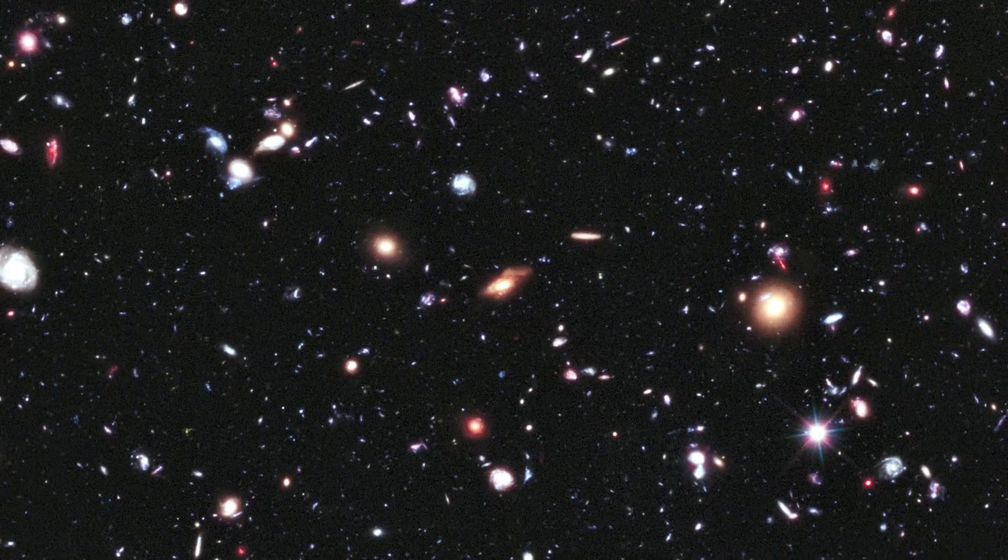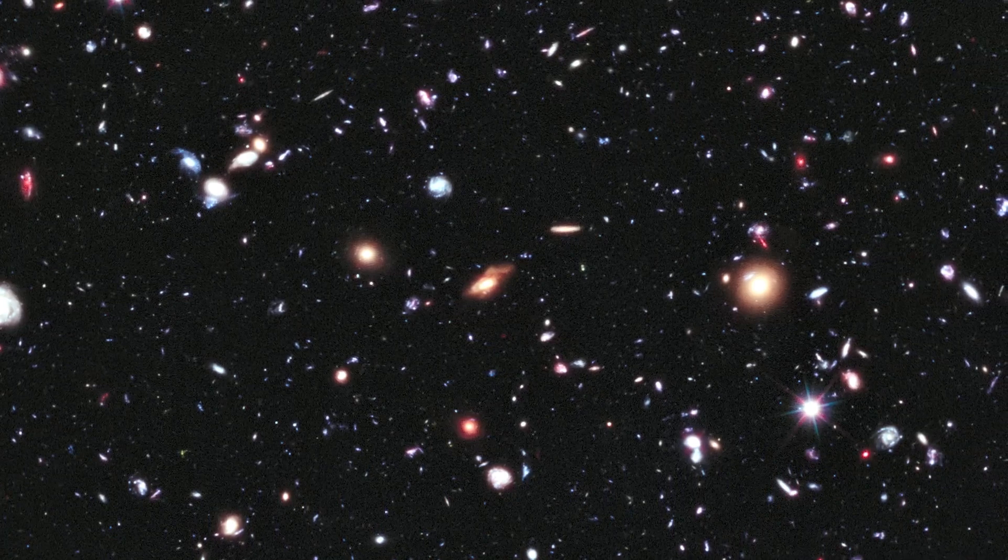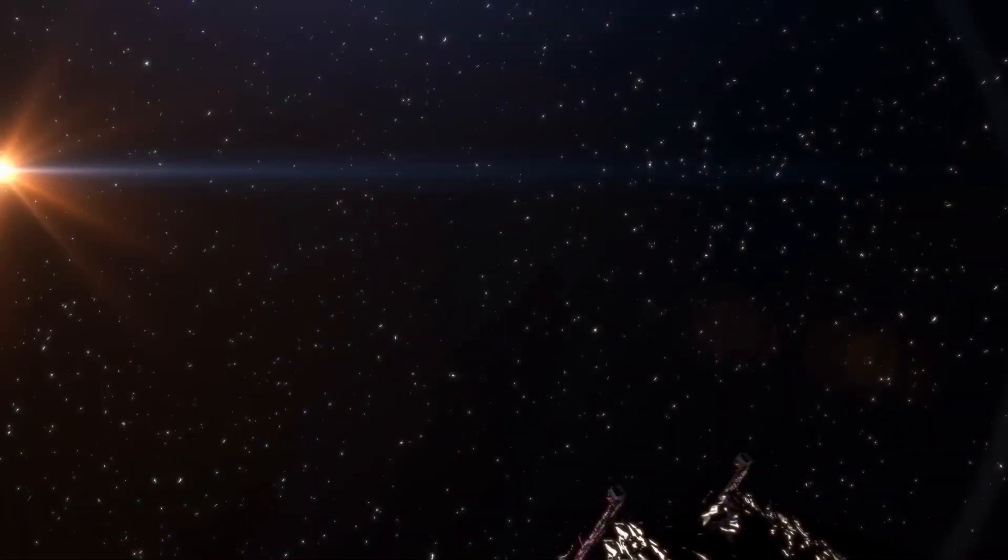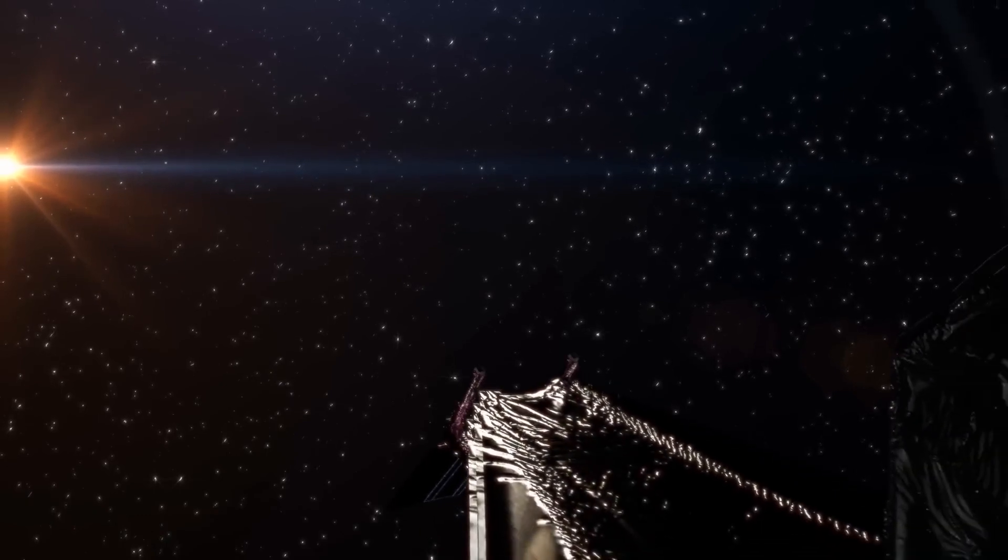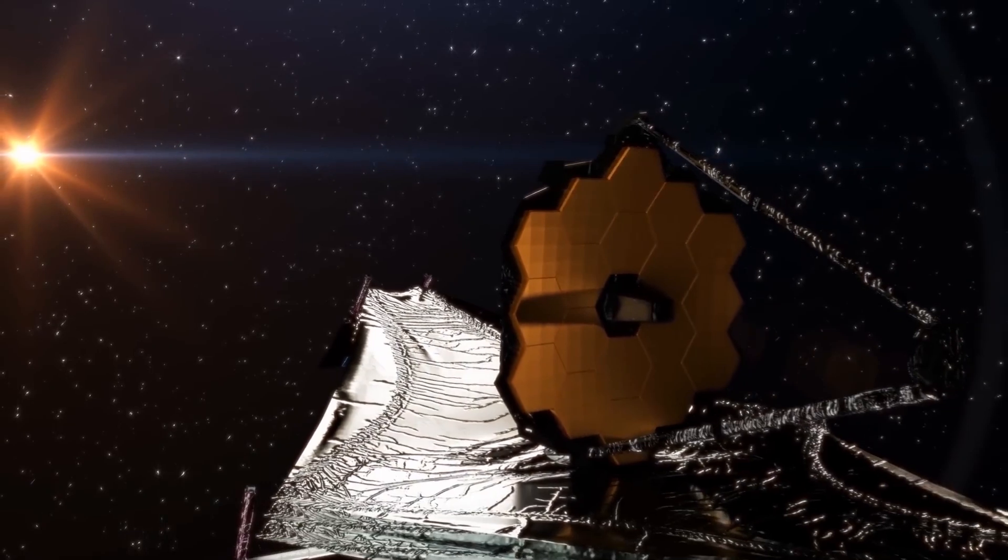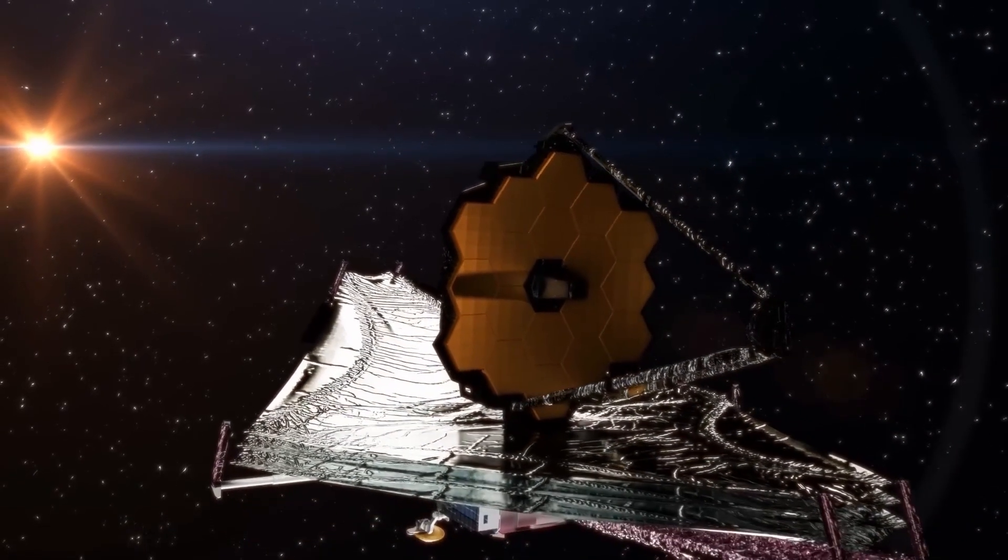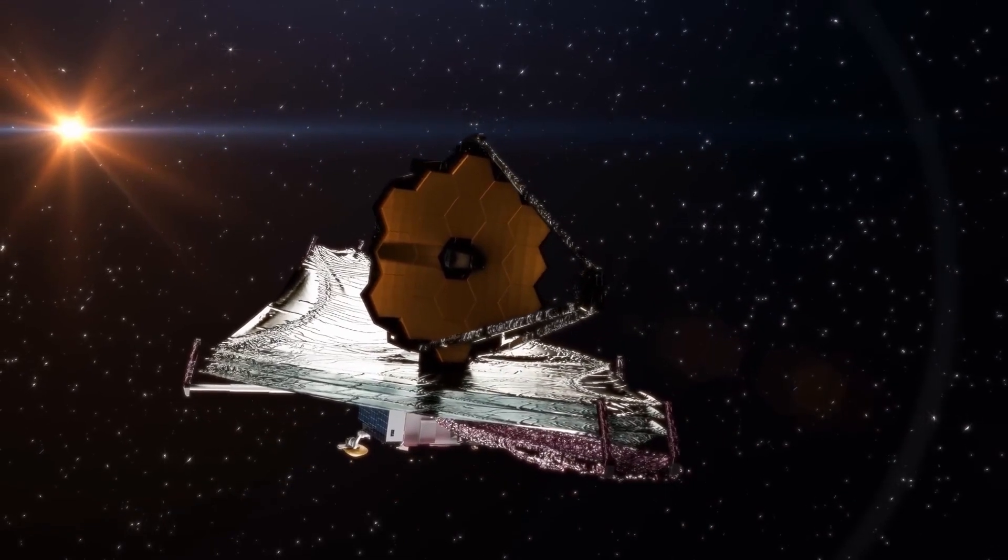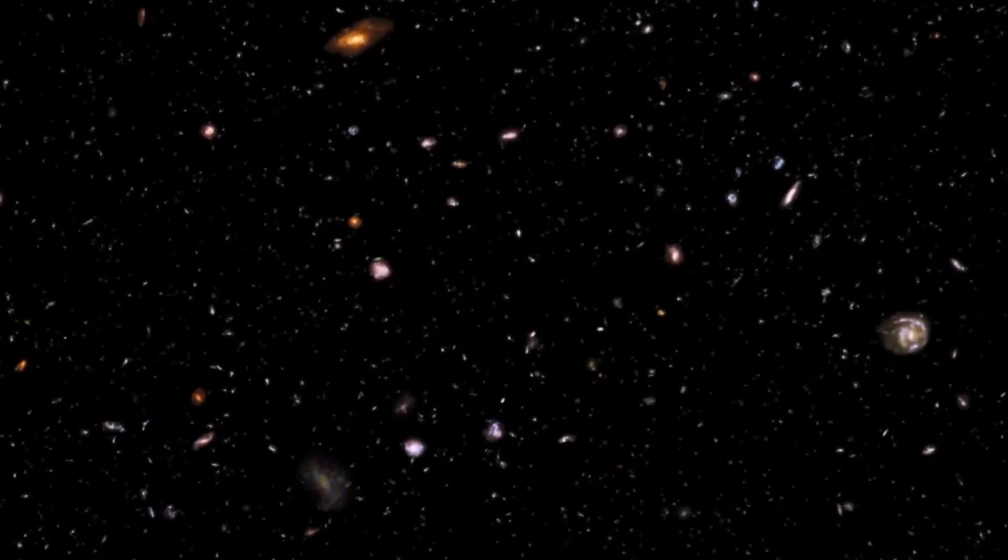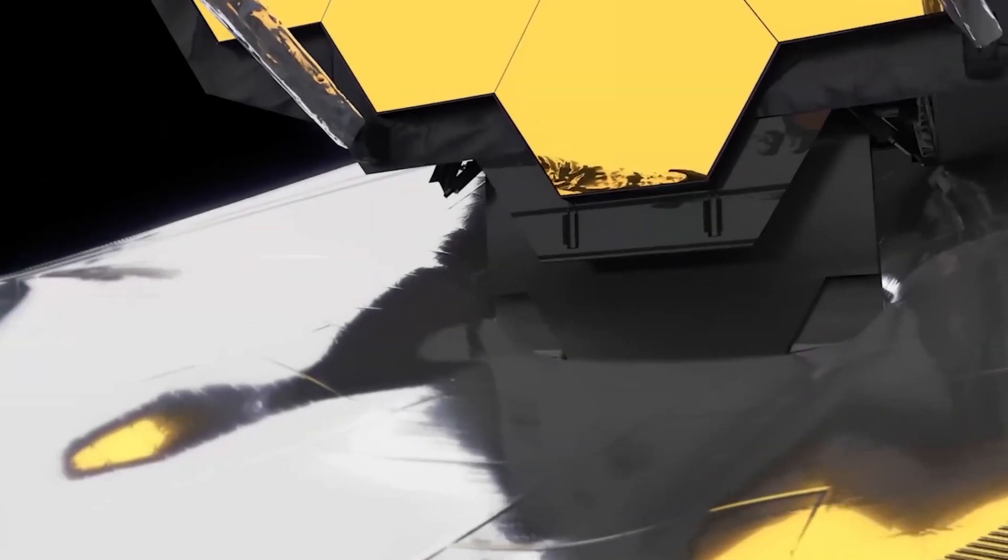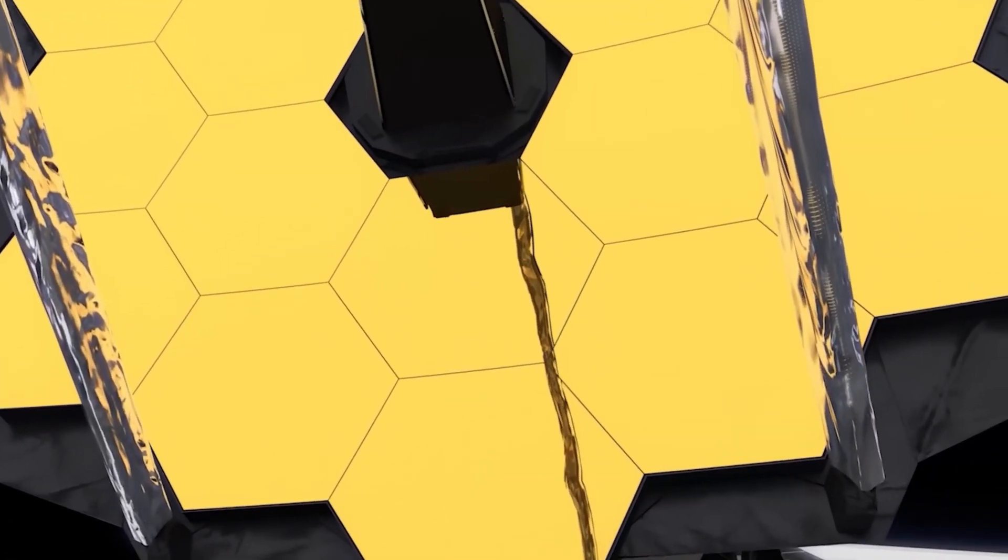Spectral data confirmed that these galaxies are at the edge of our view, some even further away than Hubble could see. This discovery is crucial because it validates one of the most important tasks of the James Webb Space Telescope, which is to study the early universe through light that has been traveling for more than 13.5 billion years. The ability to measure extreme redshifts is what sets James Webb apart, allowing astronomers to peer into the infrared range and observe the earliest galaxies in the universe.